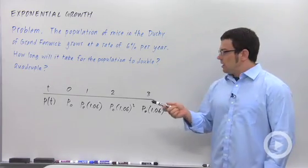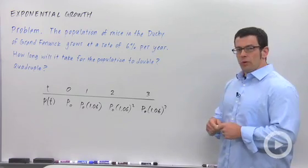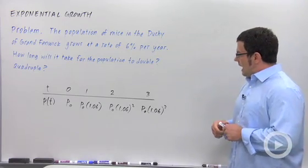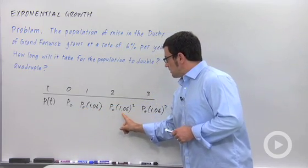I have a table of values here. I wanted to show you why this is exponential growth. Increasing at six percent per year means every year we're multiplying by 1.06.